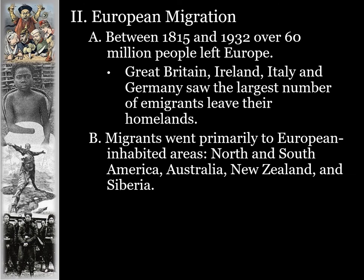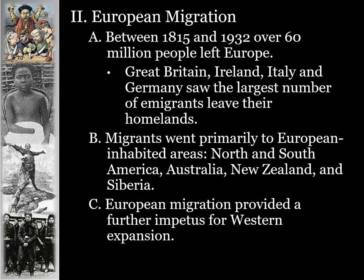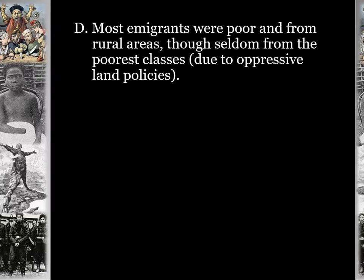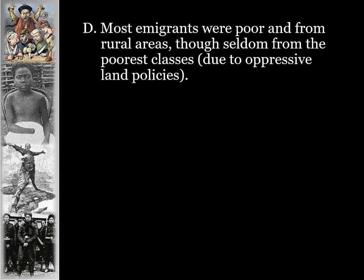Immigrants left their homelands, going primarily to European-inhabited areas: North and South America, Australia, New Zealand, and Siberia. European migration provided a further catalyst for Western expansion in this time period. Most immigrants were poor and from rural areas, though seldom from the poorest classes due to oppressive land policies in the home country.